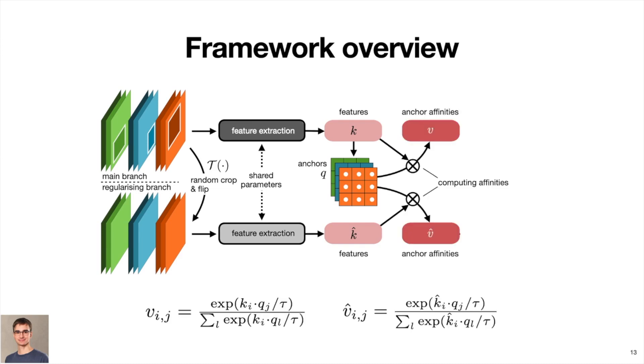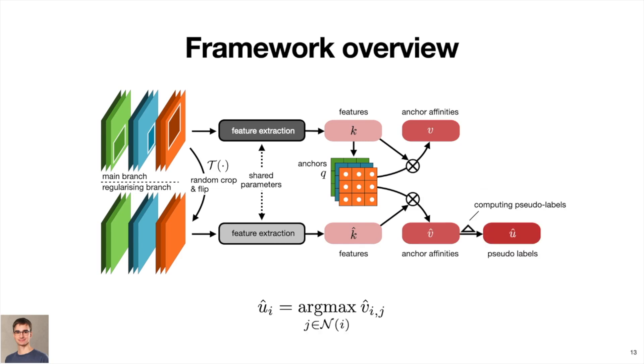We compute the cosine distance between all features in both branches with respect to the anchors. Next, we select dominant assignments to these anchors in the regularizing branch and provide those to supervise the assignment in the main branch. This is ensured by the standard cross-entropy loss.